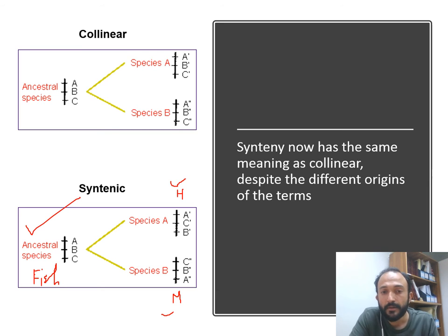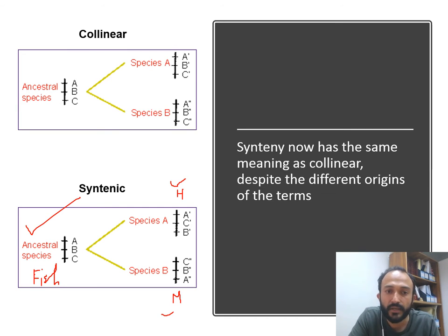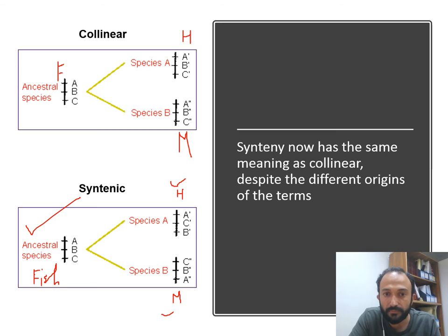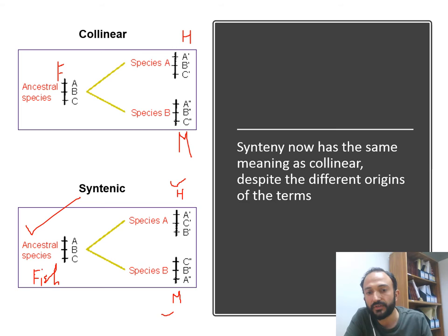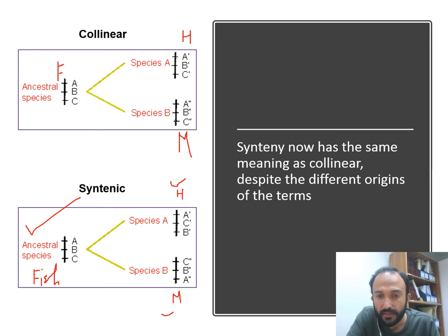There is one more term called collinearity: if the order is also exactly the same. For example, in fish the ABC genes are present on a chromosome, and in human and mouse they are again in the same region and same order — ABC, ABC. That is called collinearity. This is a modified definition of synteny, so synteny now has the same meaning as collinear, despite the different origins of the term.